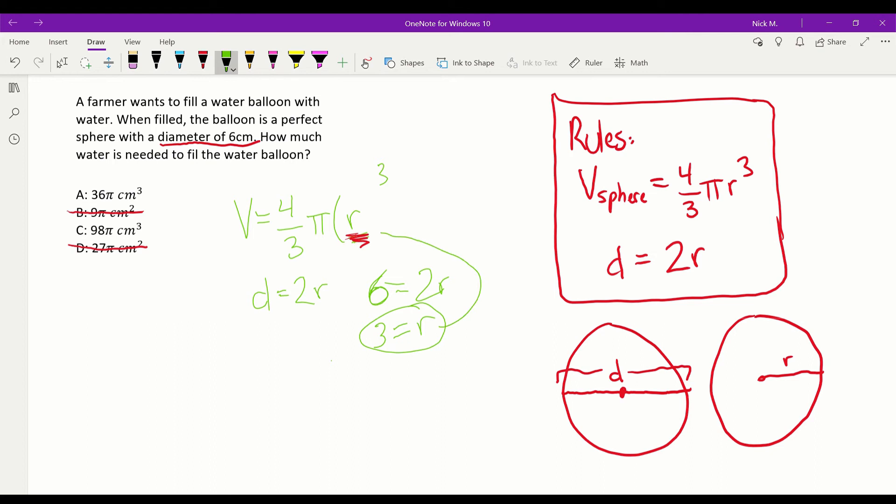Wow, that was a horrendous error. Let's redraw that. There we go. So now we have V equals four thirds pi, three cubed.